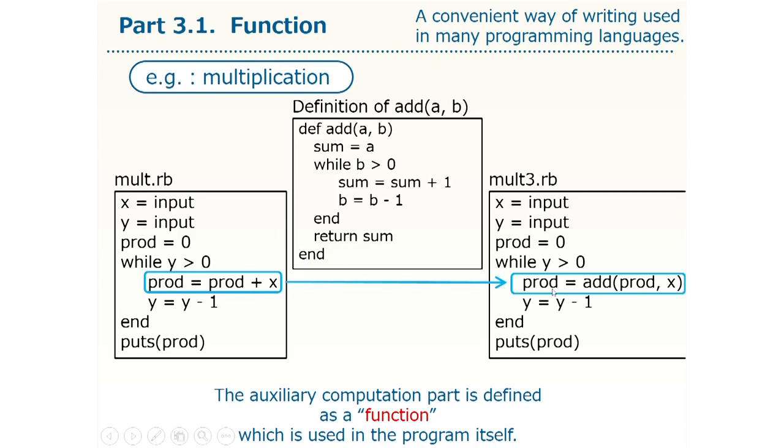In this way, the part with auxiliary computation is defined as a function, and once the function is defined, we can write the value of prod plus x as add prod comma x, just like a mathematical function. Then, prod plus x will be calculated. In this way, we can write the program more simply and naturally.